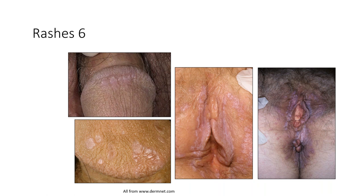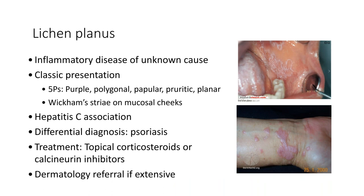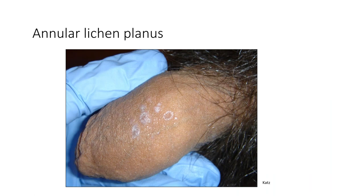Another rash: reddish purplish bumps on the glans of the penis, vulva, and perianal area — this is lichen planus, another inflammatory disease of unknown cause, less common than psoriasis. Classically described by the five P's: purple, polygonal, papular, pruritic, and planar. Can also involve oral mucosa and can be quite painful there. Associated with hepatitis C, so I screen my patients for that. Differential includes psoriasis; treat with anti-inflammatories like corticosteroids or calcineurin inhibitors, with dermatology referral if extensive.